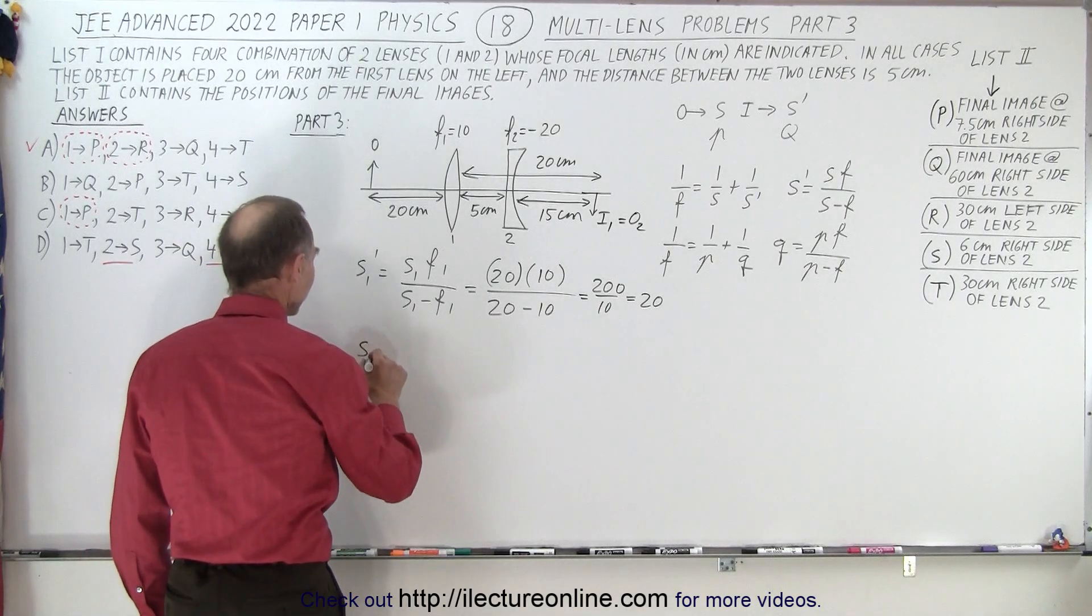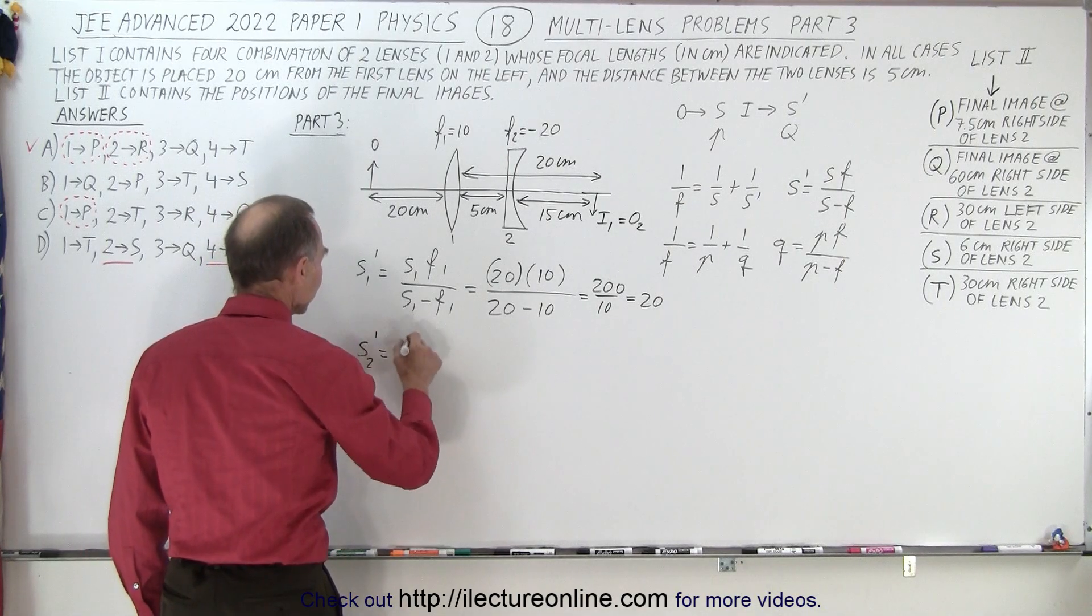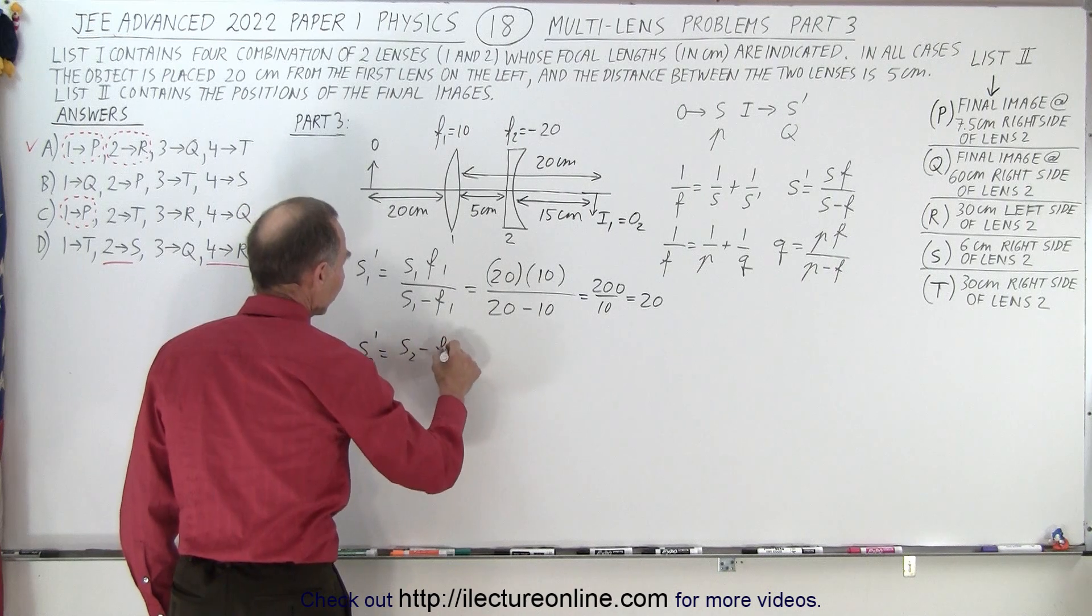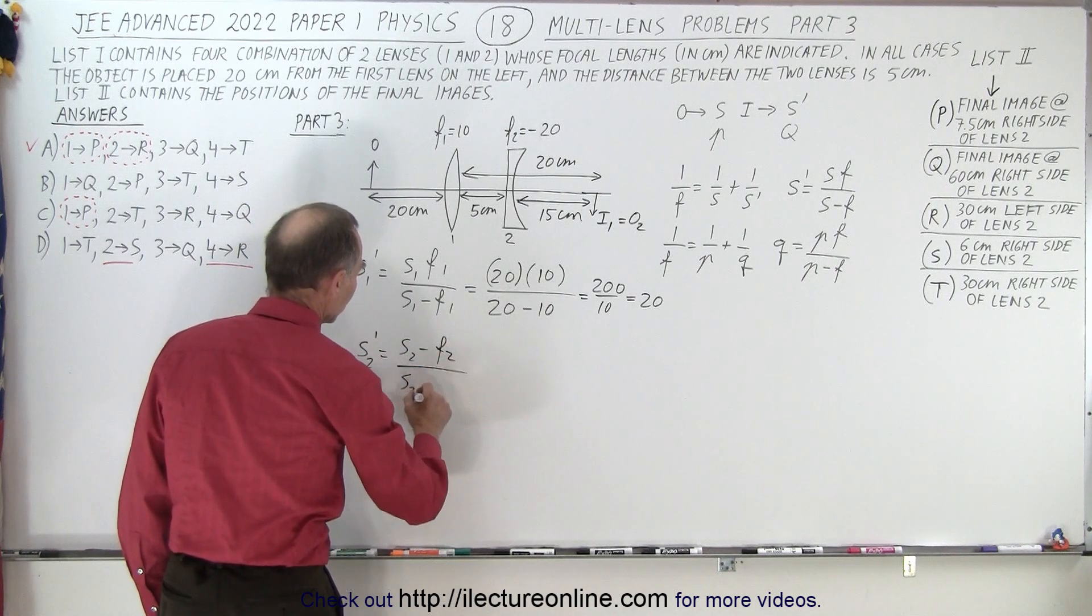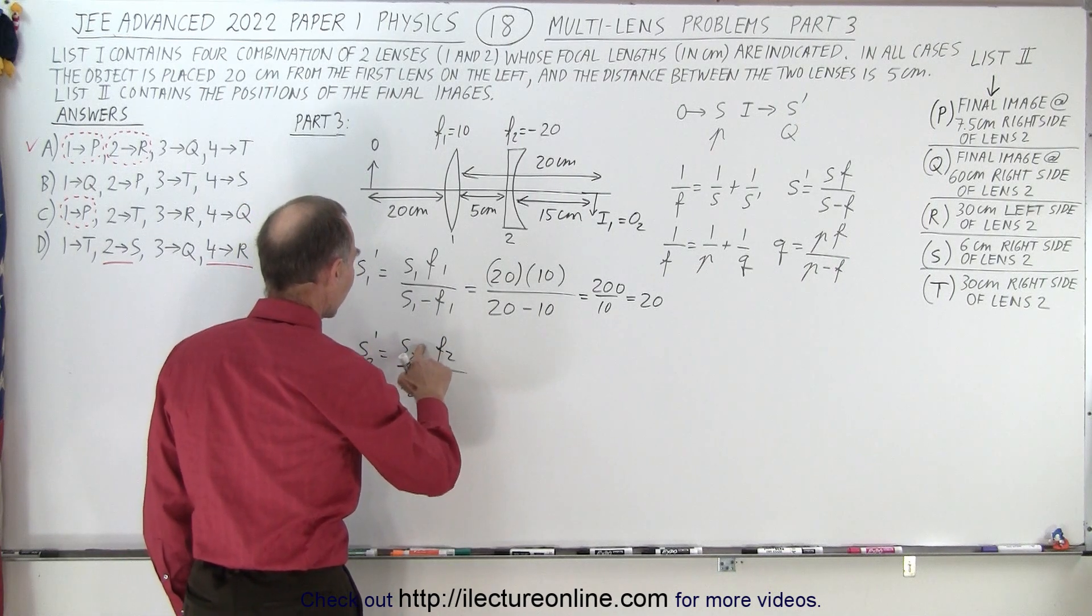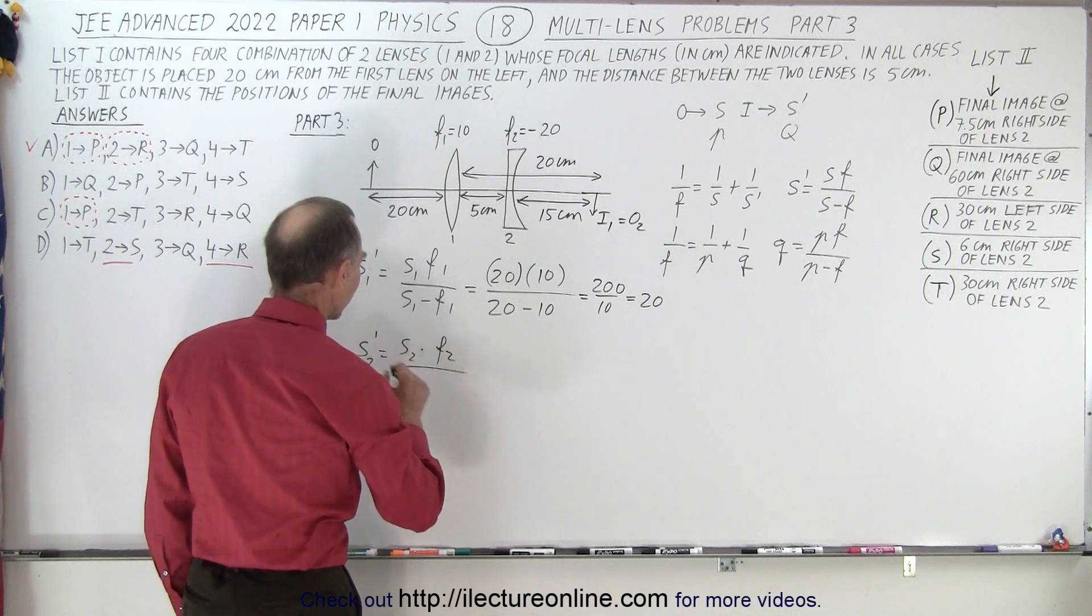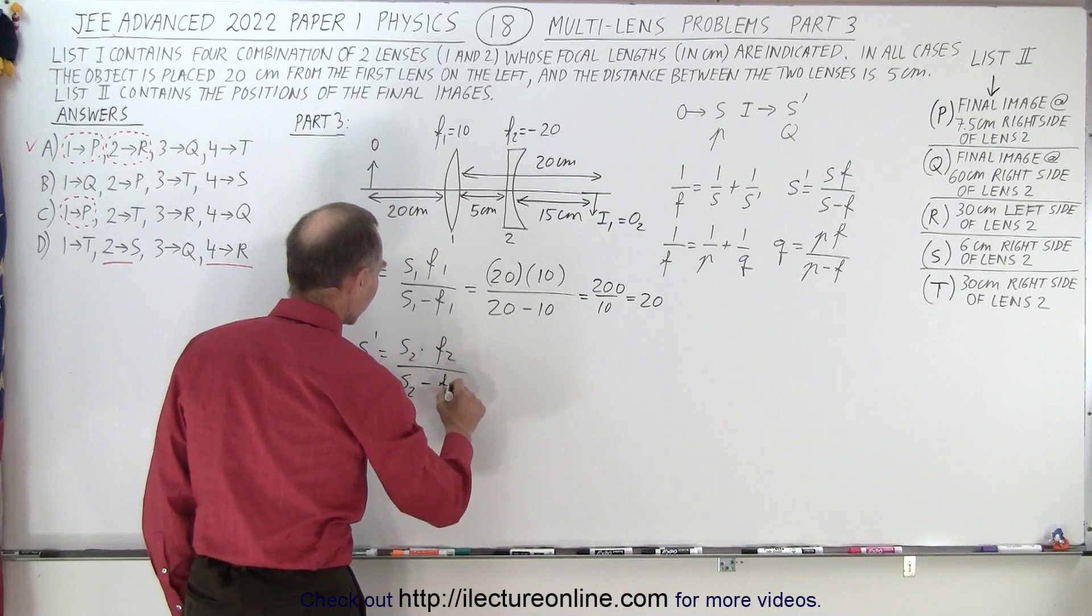So now we find the distance to the second image. S2' is equal to S2... oh not minus, this is times. S times F2 and S2 minus F2 in the denominator.